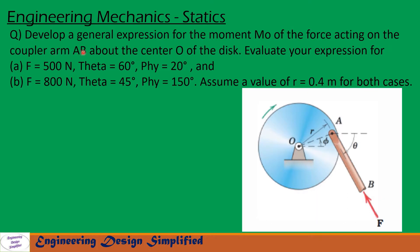Today's problem is: develop a general expression for the moment Mo of the force acting on the coupler arm AB about the center O of the disc as shown in figure. Evaluate your expression for (a) F = 500 N, theta = 60°, phi = 20°, and (b) F = 800 N, theta = 45°, phi = 150°. Assume a value of r = 0.4 m for both cases.